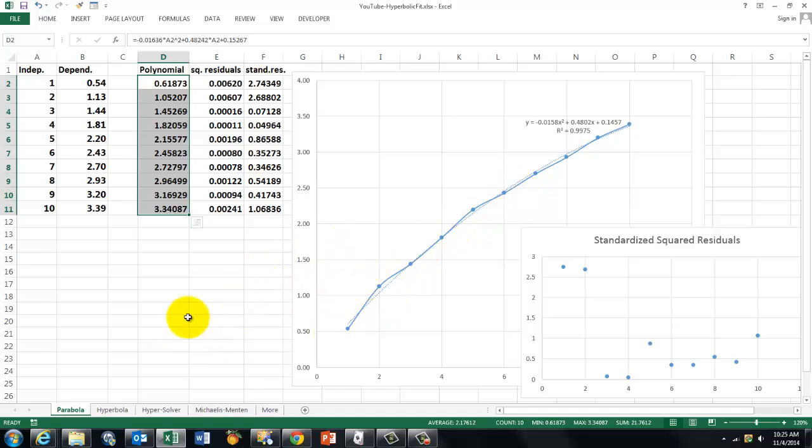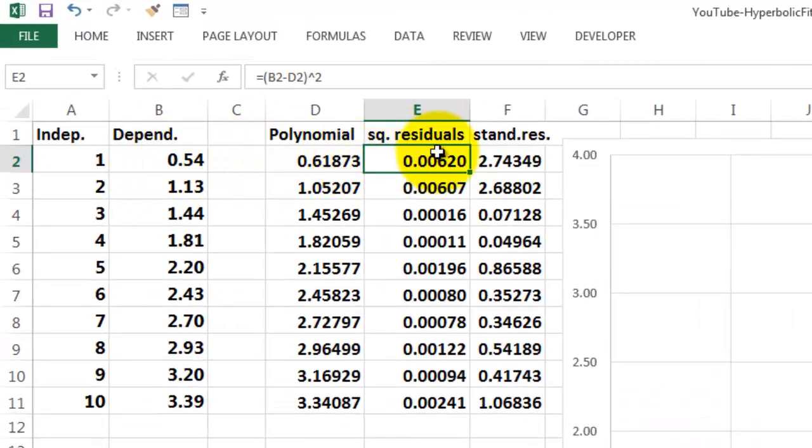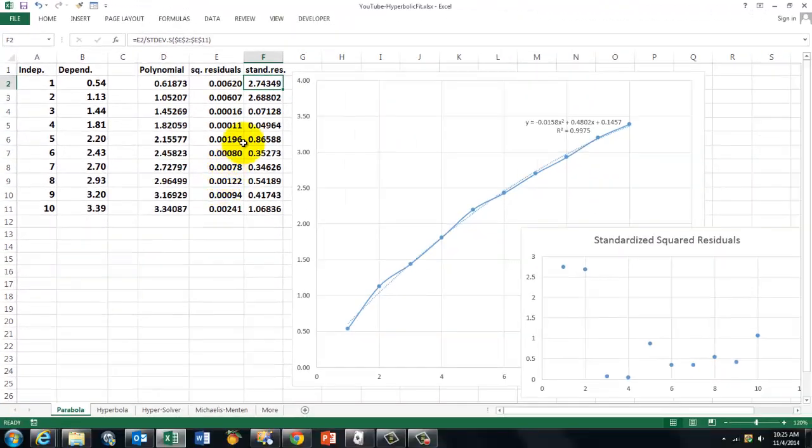If you want to find out whether that is a good curve, the R-squared value does not always tell you the whole story. What you should do is calculate the squared residuals. So that is the difference between B2 and D2 to the power of 2. Copy that down and then calculate the standardized residuals. The standardized residual is the E2 value, that is the squared residual divided by the standard deviation of all the squared residuals.